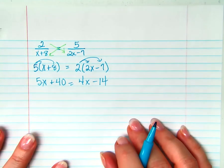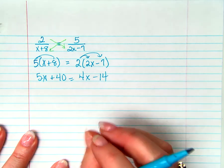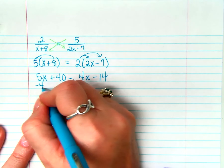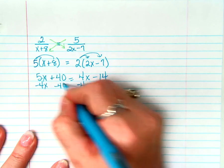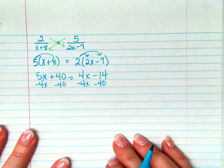Now all we have to do is get all of our like terms together. We're on opposite sides of the equal sign, though, so we can't just mash them together. So we have to subtract 4x from both sides and subtract 40 from both sides. Are you okay if I do two steps at one time? You okay with that?